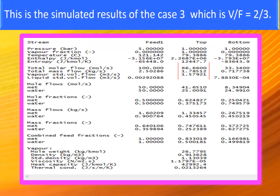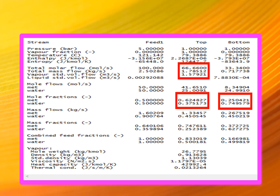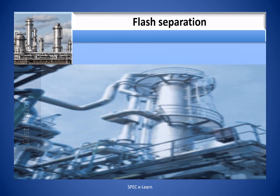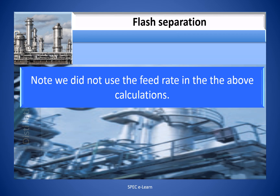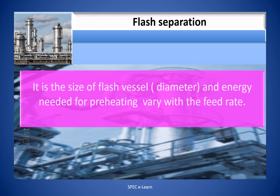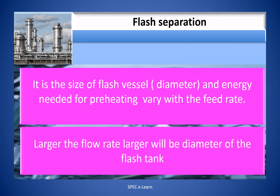This is the simulated result for Case 3, where V/F = 2/3. The vapor concentration of methanol is 0.63 and that in the liquid phase is 0.25. Note: we did not use the feed rate in the above calculations. The equilibrium concentrations are not impacted by the feed rate. It is the size of the flash vessel — diameter — and energy needed for preheating that vary with the feed rate. Larger the flow rate, larger the diameter of the flash tank.